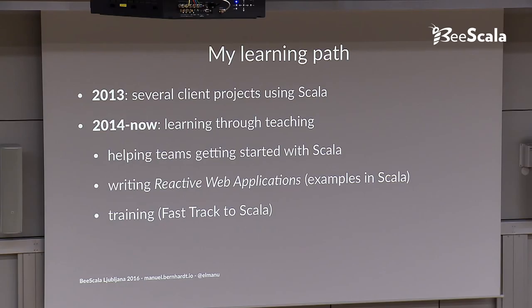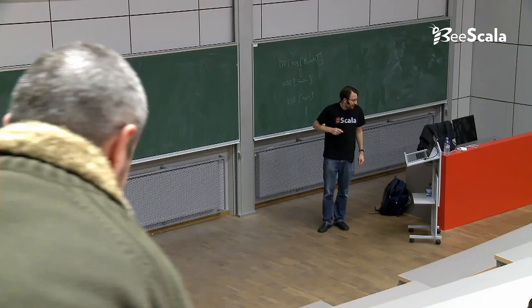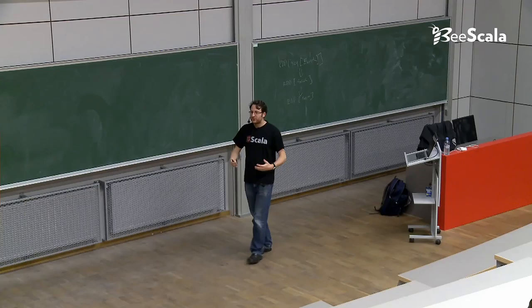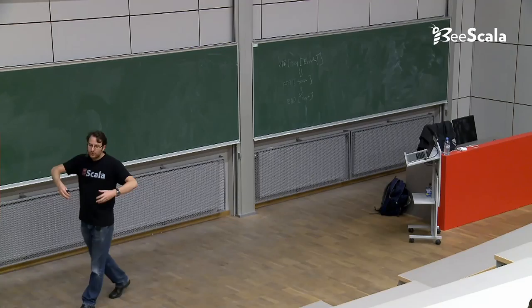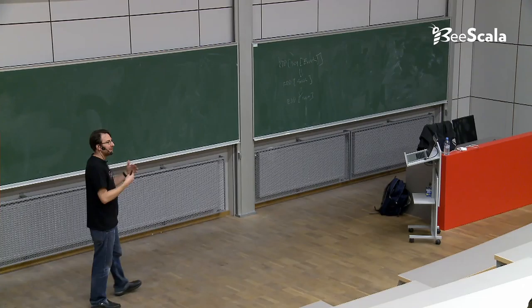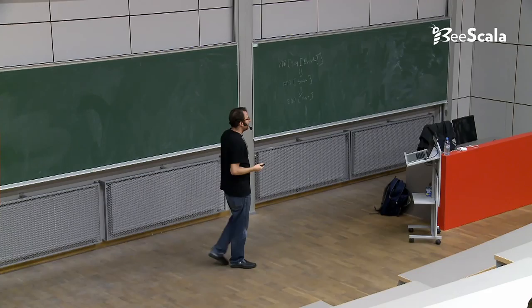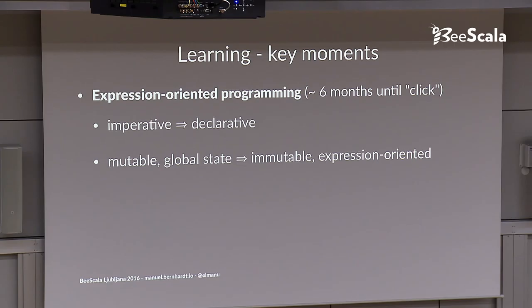Key moments in learning, so this is important here. I think the hardest thing when you have an imperative Java object-oriented background is to do the transition towards expression-oriented programming. Expression-oriented programming meaning that you have only immutable state and you have small expressions that mutate that state. That took me approximately six months until my brain said click. You know what you have to do? You have to forget what you used to know. You have to unlearn and learn again a new paradigm of programming.